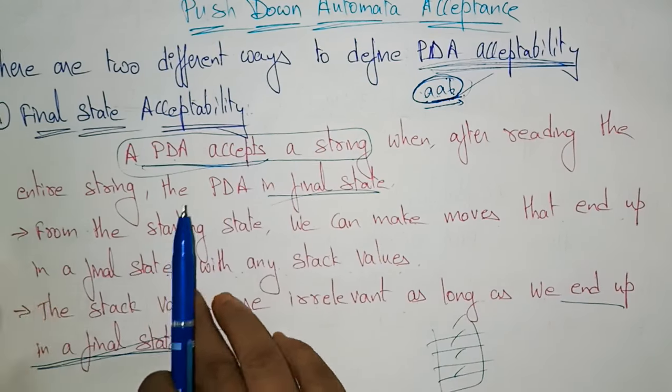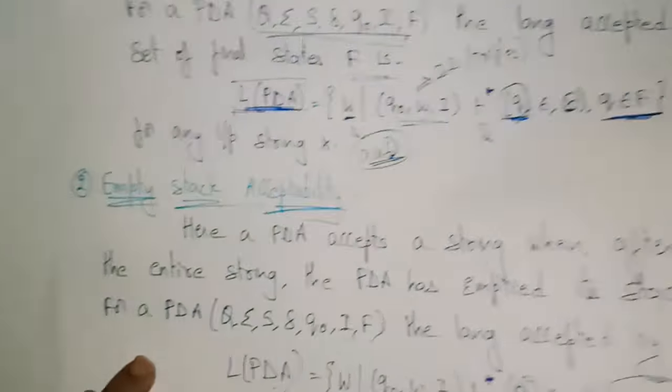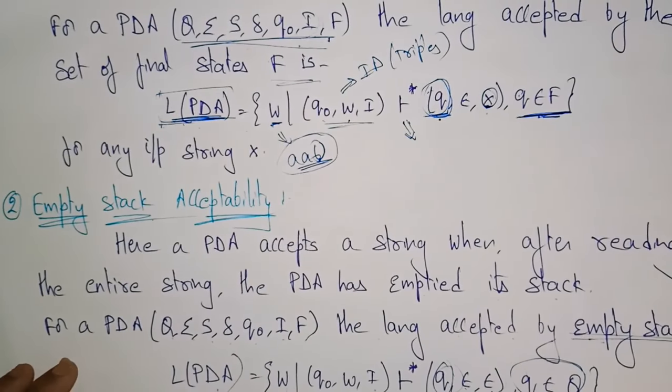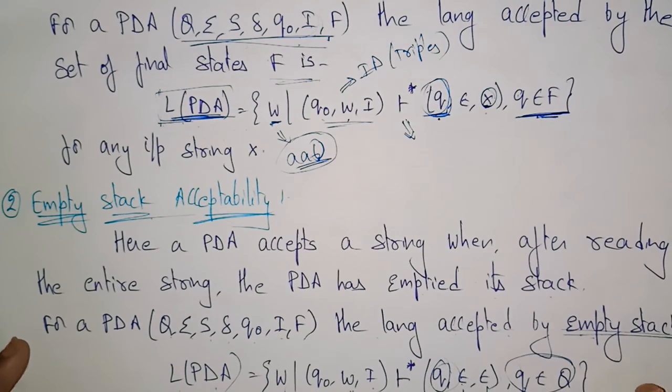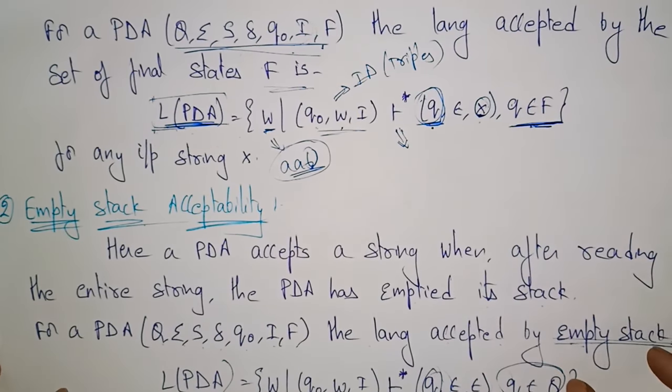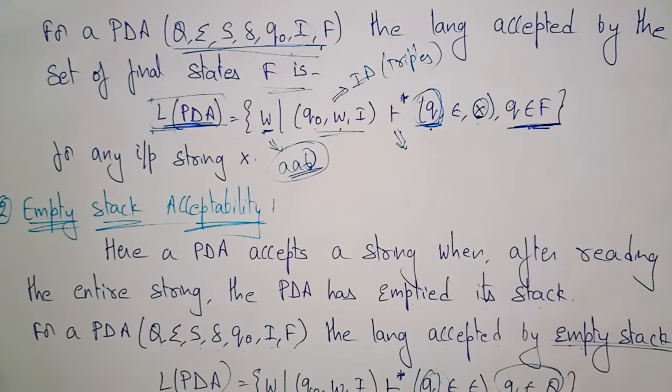So these are the two different ways to define PDA acceptability: one is final state acceptability and another is empty stack acceptability. In the next video, we'll see problems on PDA. Thank you.